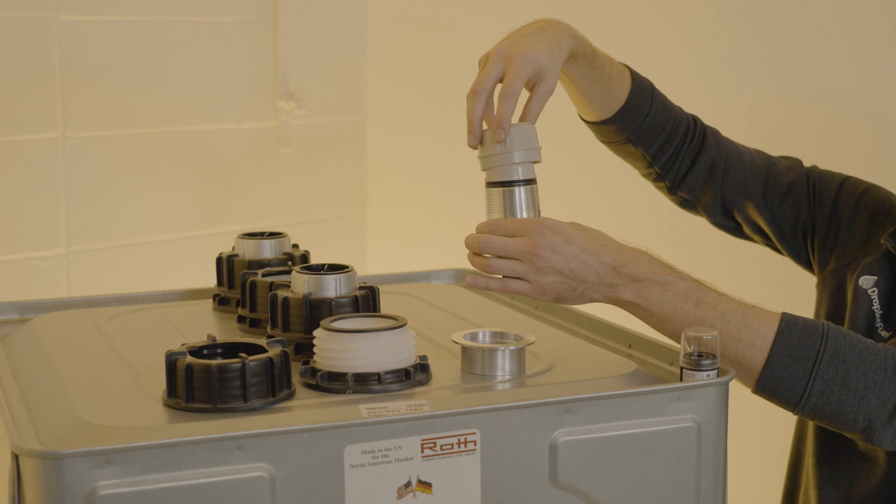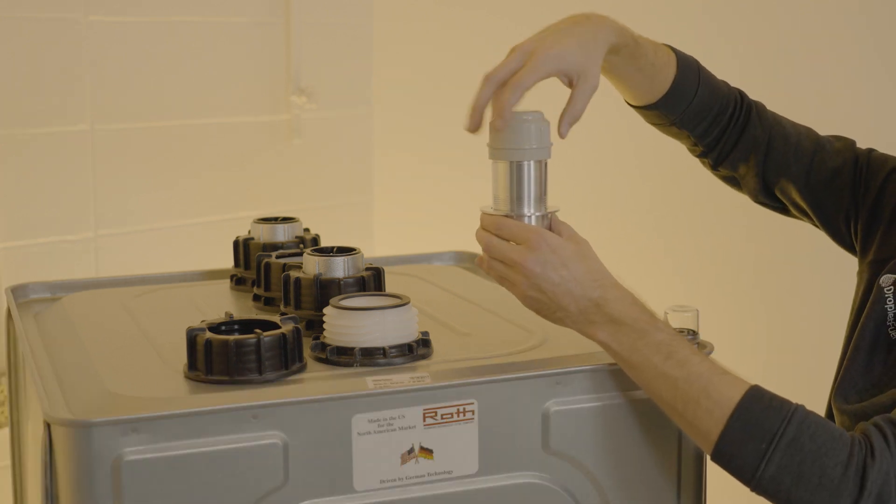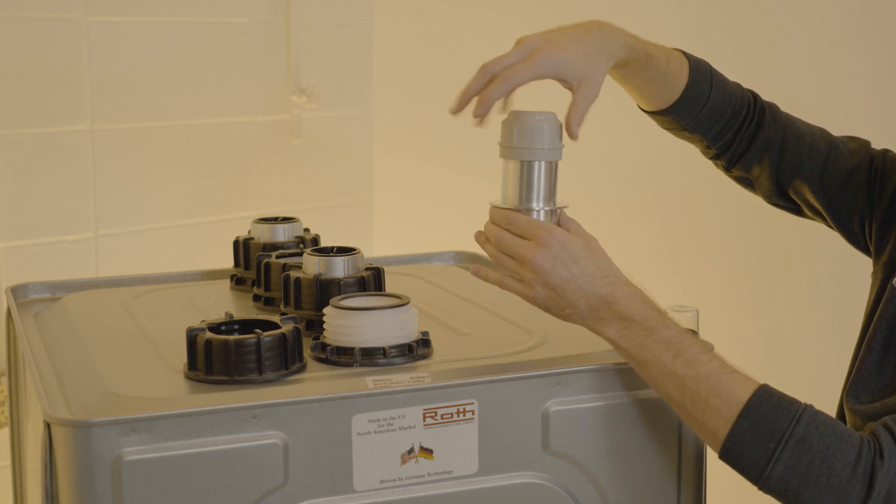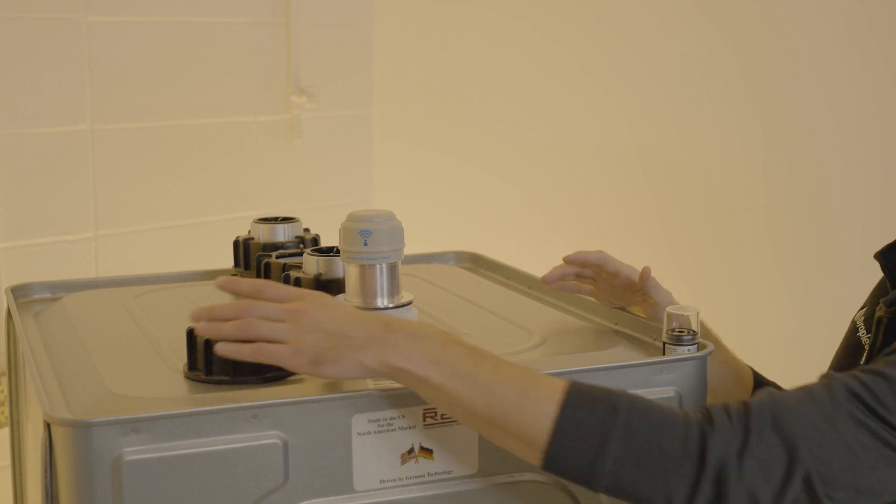Once that's lined up we're gonna put the cap back on, we'll hand tighten the smart oil gauge assembly into the Roth adapter, and finally we'll lower that whole assembly onto that gasket that we have on our white fitting here.